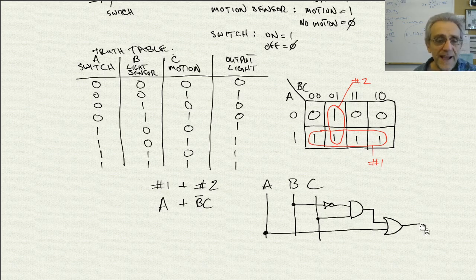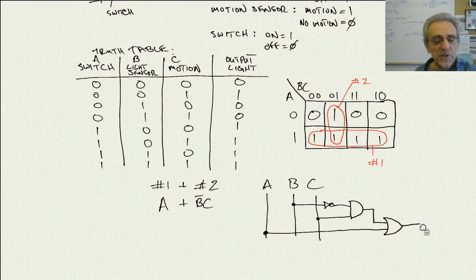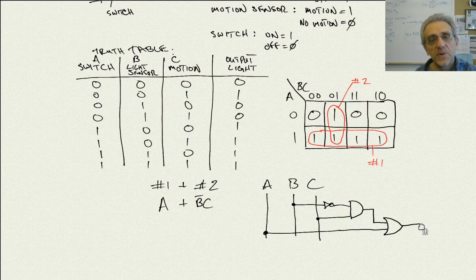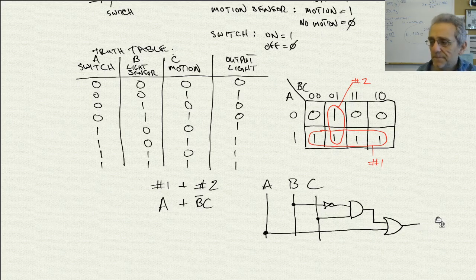That circuit produces the correct output for the three inputs — the switch, the light sensor, and the motion detector — and the output is the light bulb.